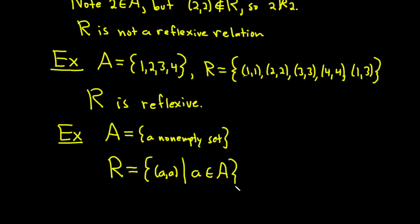And then this is clearly reflexive, right? Because every single element in R looks like (1,1), (2,2), (3,3), (4,4). They're all just (a,a). So in this case, R is reflexive.